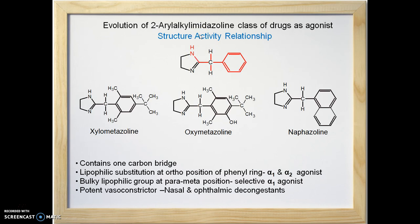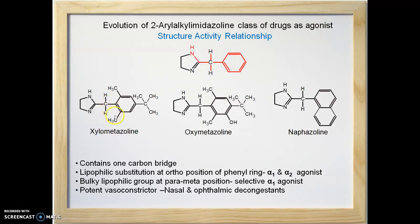Here we will learn the structure-activity relationship of 2-aryl alkyl imidazolines. These compounds consist of a CH2 or methylene bridge between the phenyl ring and the imidazoline ring. When we look at structures of compounds in this class, we find that the ortho position of the phenyl ring, relative to the methylene linkage, comprises lipophilic methyl groups. Lipophilic substitution at the ortho position of the phenyl ring is responsible for imparting both alpha 1 and alpha 2 agonist activity.